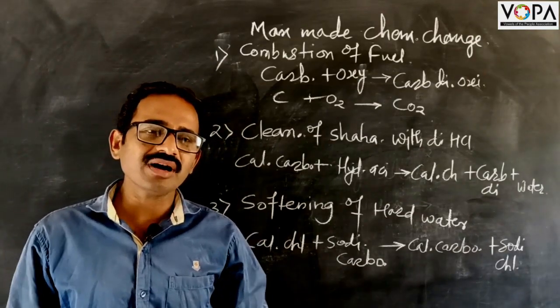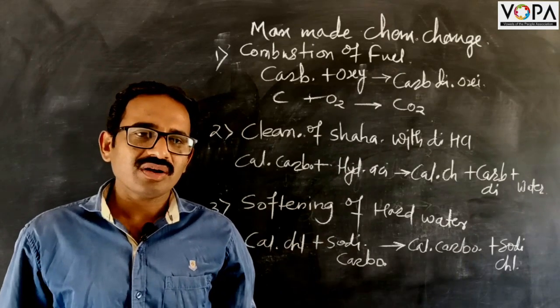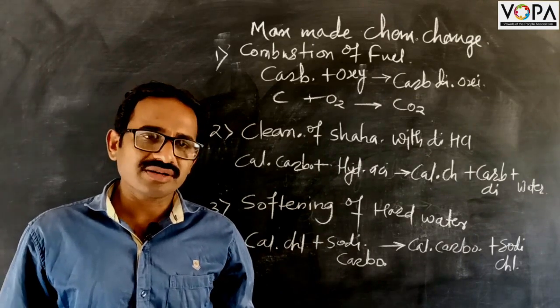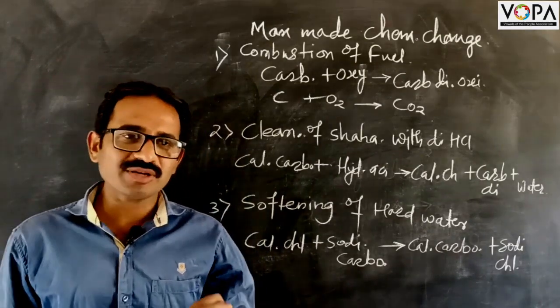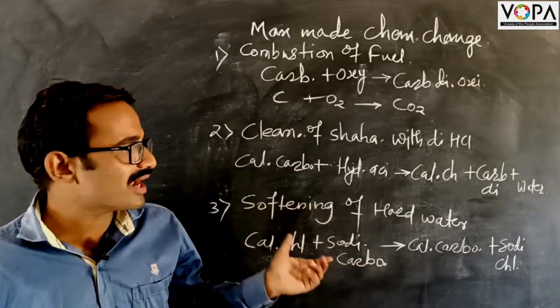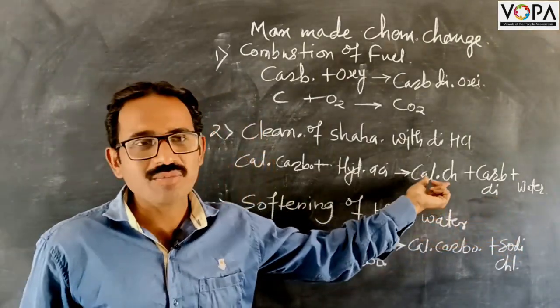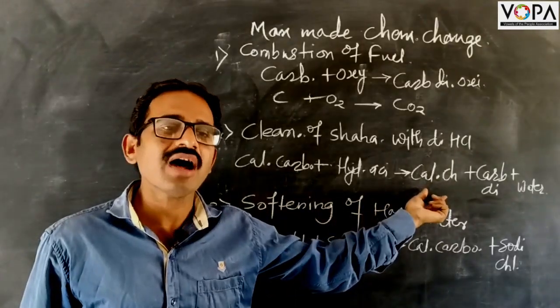When we clean the Shahbadi's style, that is calcium carbonate, with dilute hydrochloric acid, then we get bubbles of carbon dioxide and calcium chloride which is dissolvable in water.